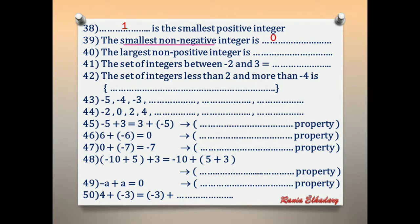Number 40: the largest non-positive integer. We have the words 'largest non-positive.' The answer is 0.